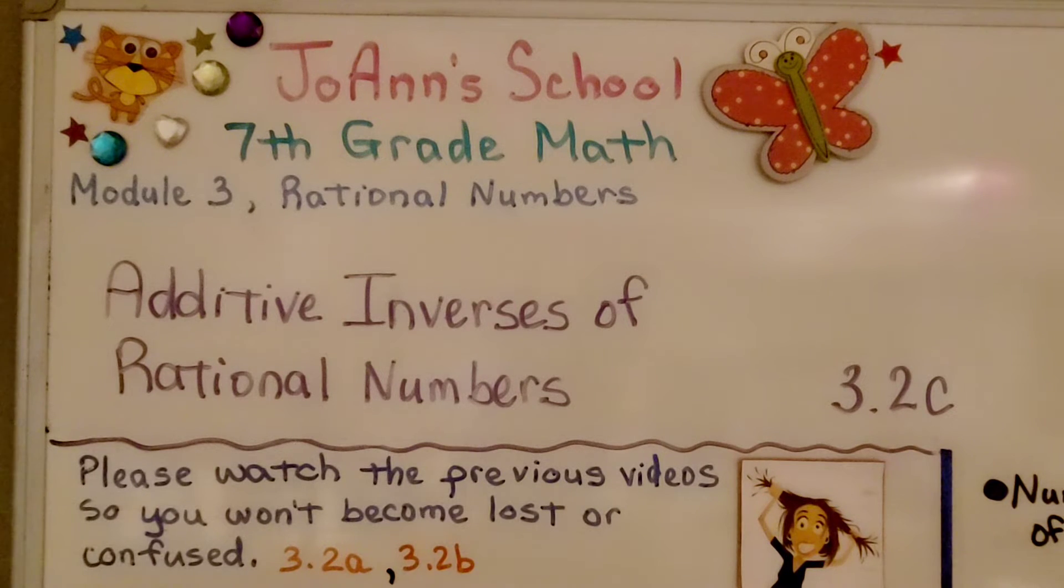We're now at the third part of the lesson, 3.2c, Additive Inverses of Rational Numbers.